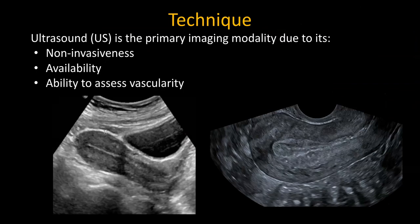The advantages of ultrasound are that it's non-invasive, it's readily available, and we can assess vascularity, which is important in lesions such as torsion. The pelvic ultrasound will usually start with a trans-abdominal pelvic ultrasound with a full bladder, using the bladder as an acoustic window. It will also help to screen other abnormalities such as renal pathologies, bladder pathologies, and because pelvic pain is a presenting symptom for other pathologies such as acute appendicitis, it is also useful to evaluate that.